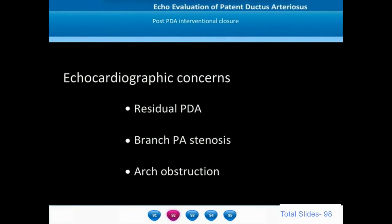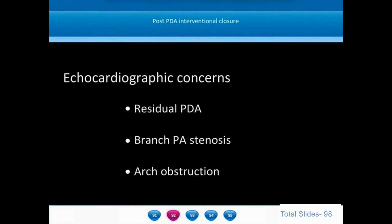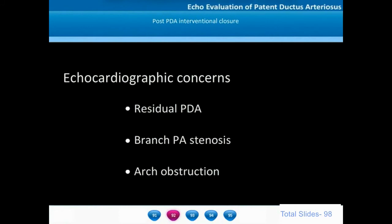Ductus arteriosus are largely closed by interventional methods. When we analyze a patient after interventional ductal closure, we need to look at the echocardiogram for features like residual PDA, branch pulmonary artery narrowing, and aortic arch narrowing.